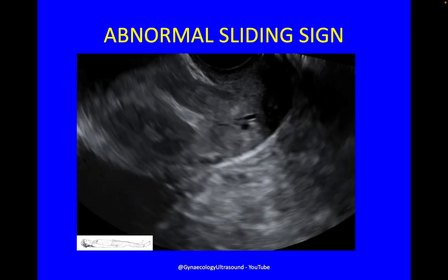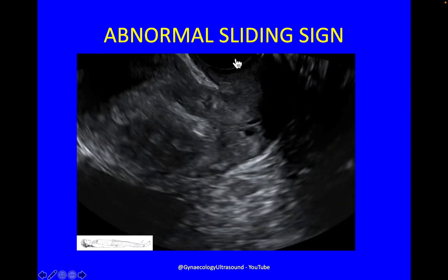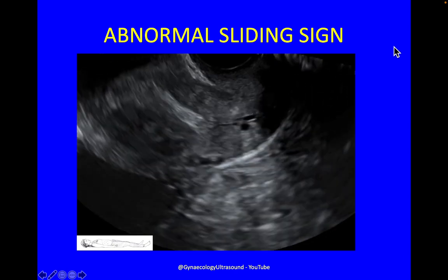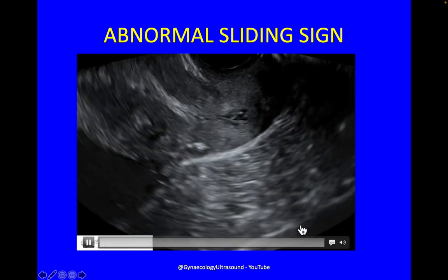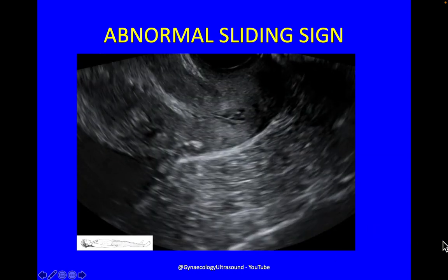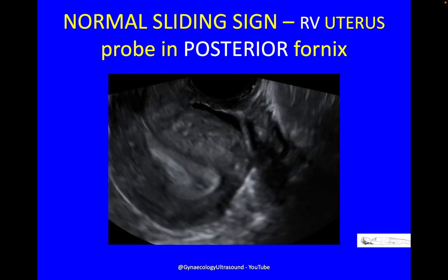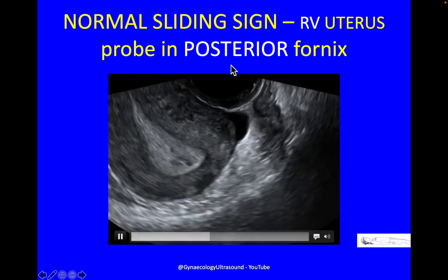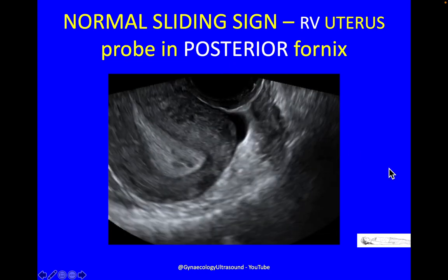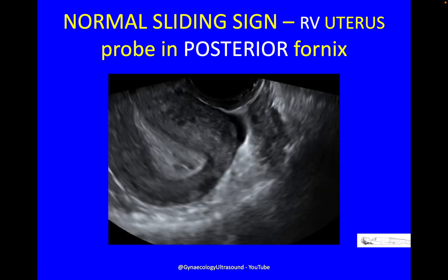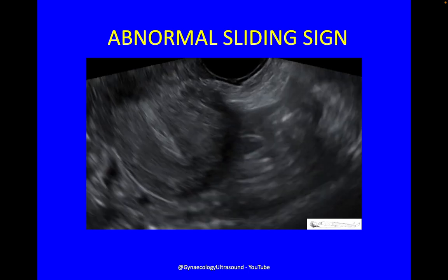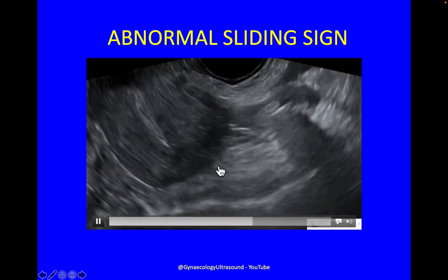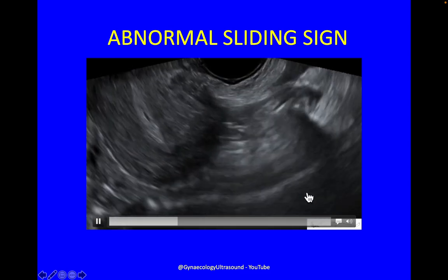This is an abnormal sliding sign of an anteverted uterus. You can see that with me pressing very gently, there's movement but everything is glued together — this is in fact a frozen pelvis. Then in a retroverted uterus, when you pull the probe out slightly, you often get to see a pocket of fluid if it's there. Just very, very gently press and you can see beautiful free mobility between the back of the uterus and the bowel. Compare that to this, which is an abnormal sliding sign — everything's glued together, the posterior uterine wall is adherent to everything behind including bowel. This is a frozen pelvis.